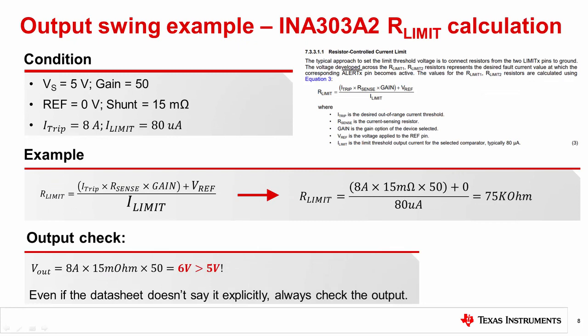We next look at an overcurrent protection design with the INA303. In this example, we wish to set the limit resistor for a given current threshold. In the INA303 datasheet, the equation is provided and the calculation is straightforward. Substituting the numbers into the equation, we can see that the resulting limit resistor value is 75 kilohms.